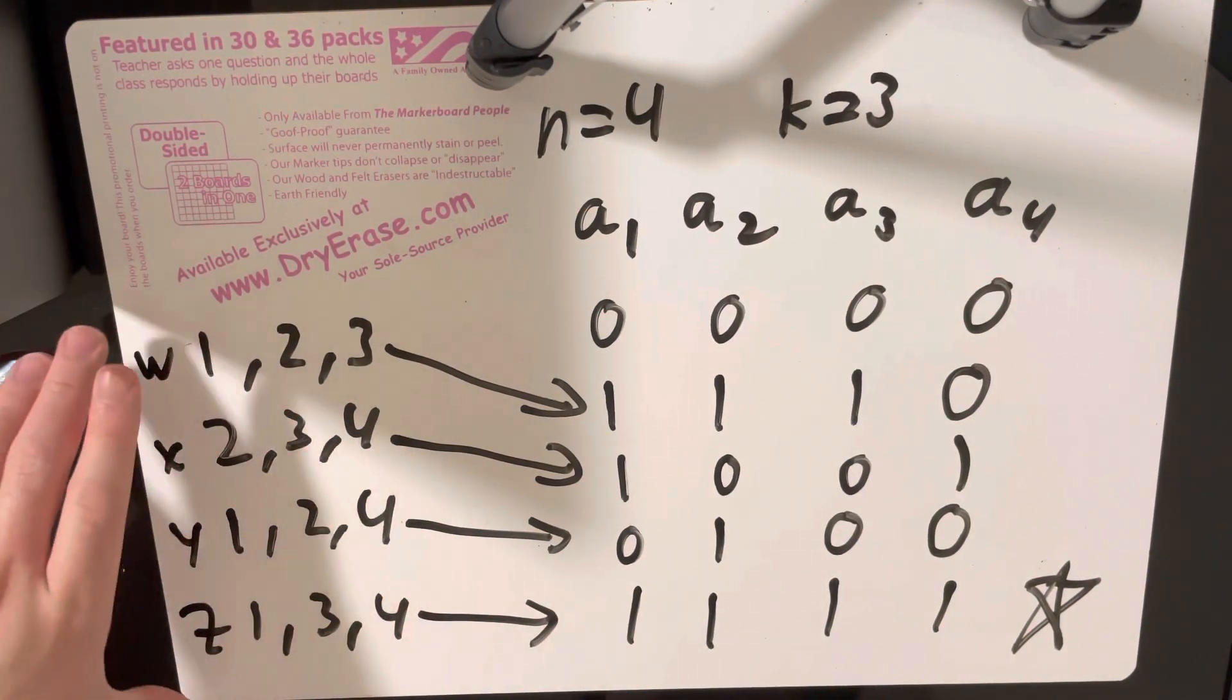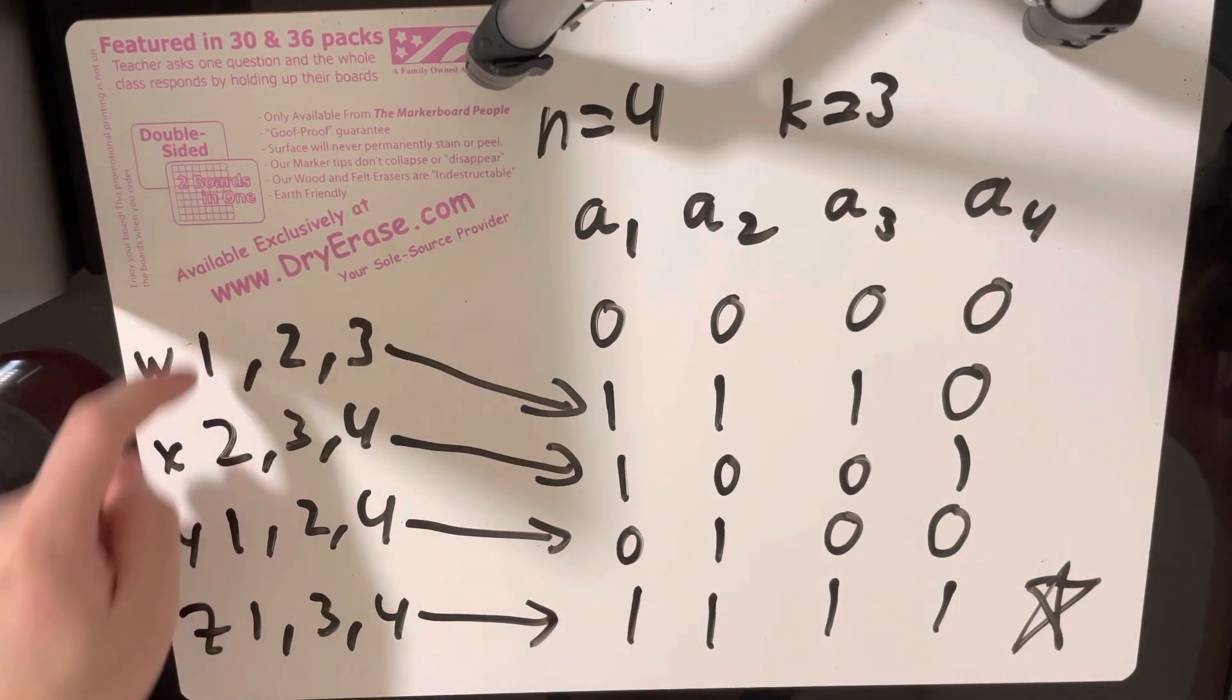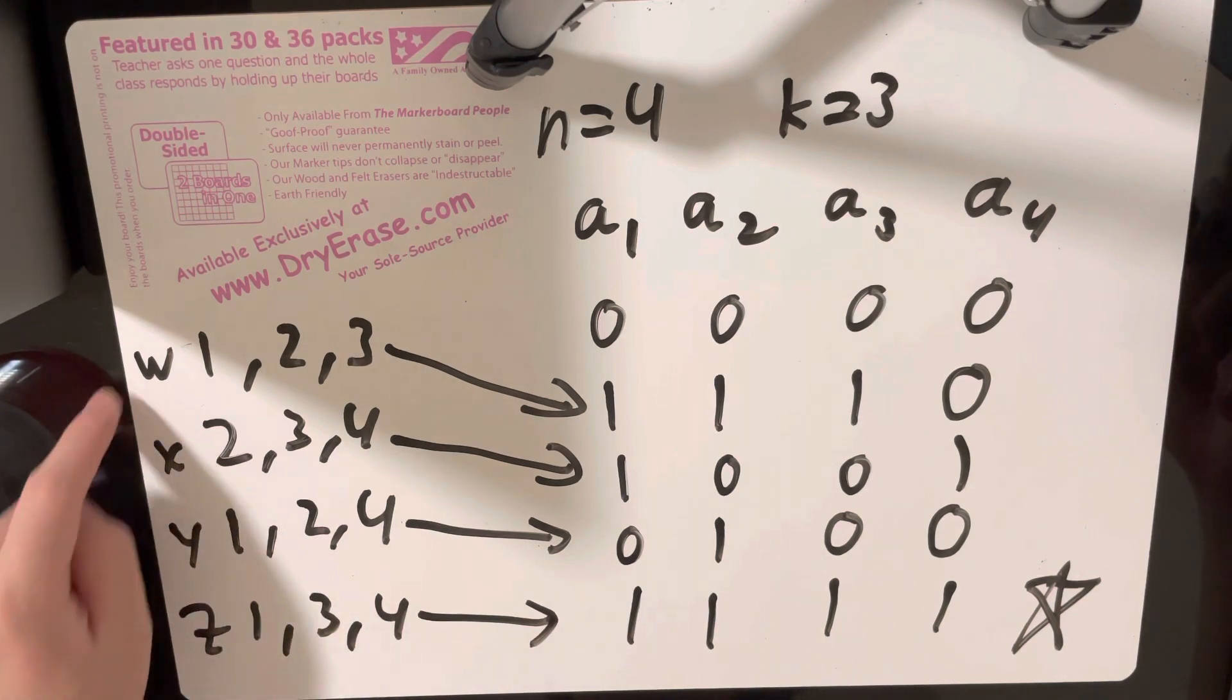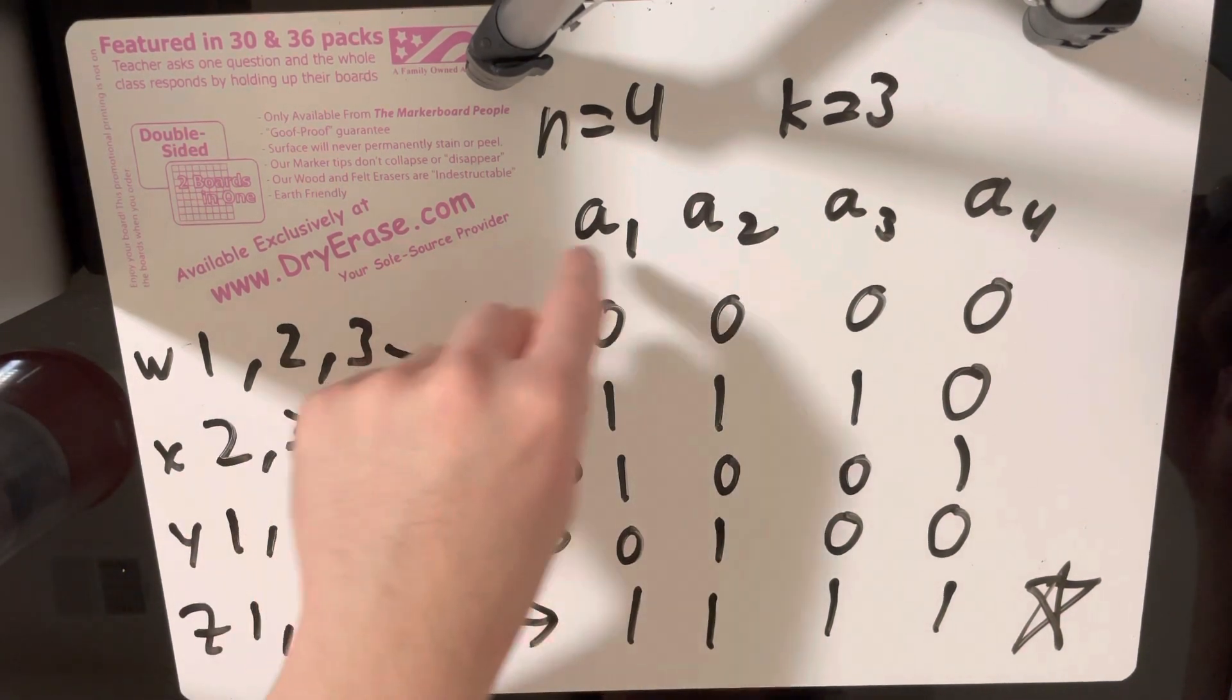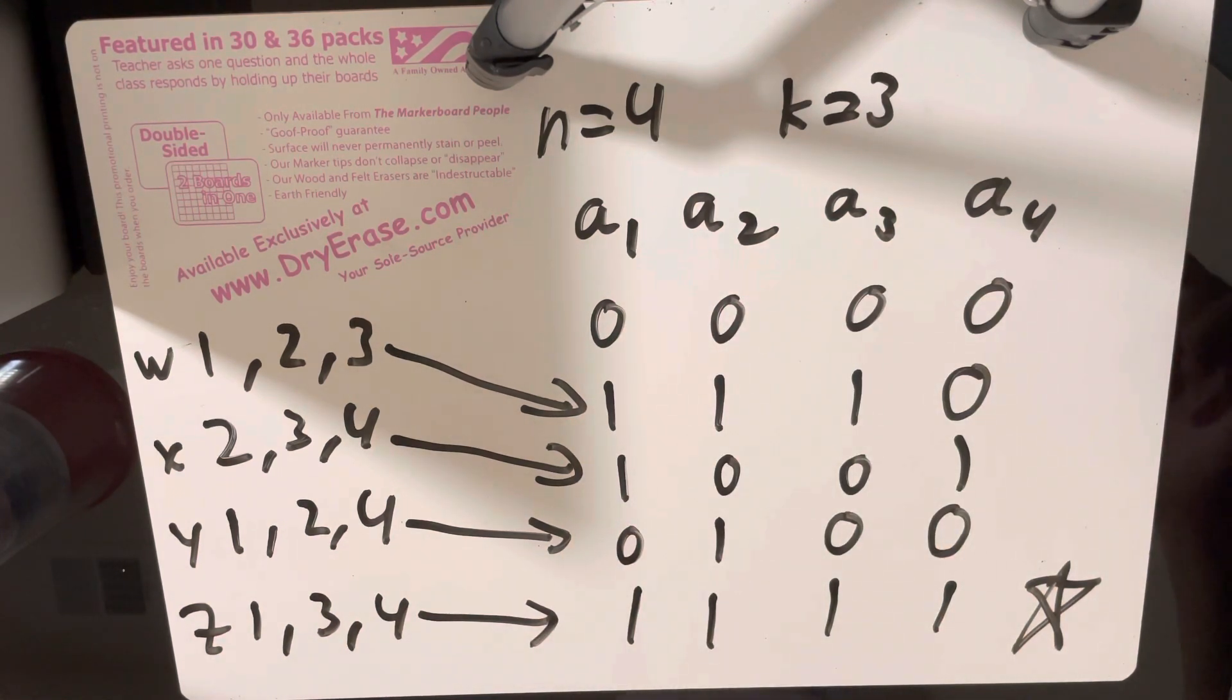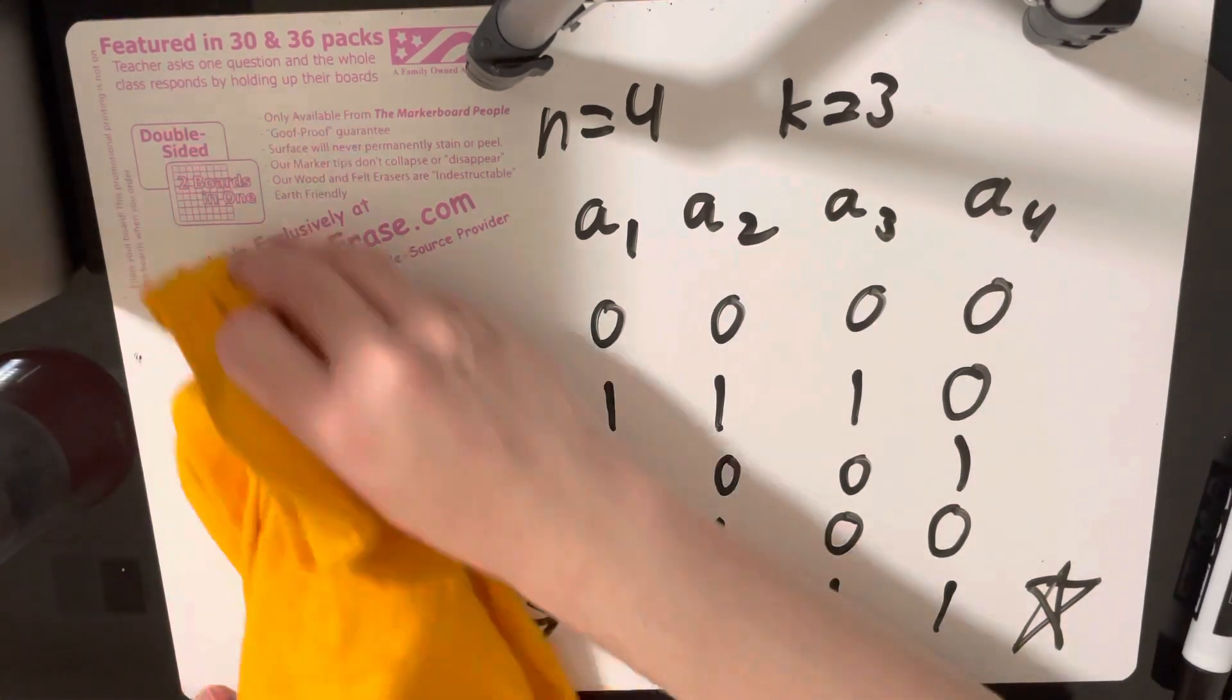Because 1 appears an odd number of times, 2 appears an odd number of times, 3 appears an odd number of times, and 4 appears an odd number of times. So W XOR X XOR Y XOR C is equal to A1 XOR A2 XOR A3 XOR A4. And that's the number that we're trying to find in the end. Okay, so this simplifies the problem a little bit. Let me erase the board first a little bit.